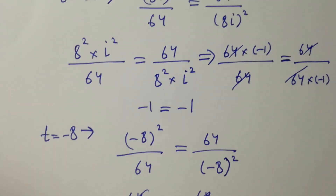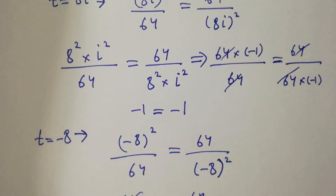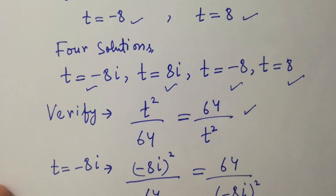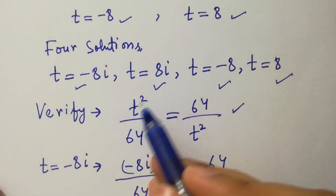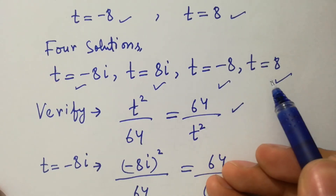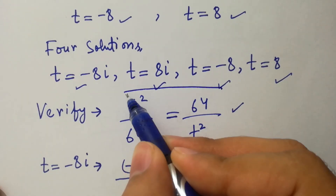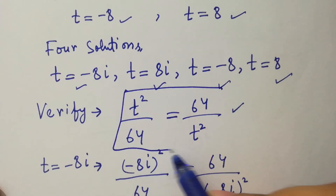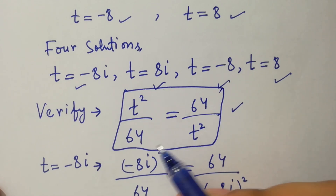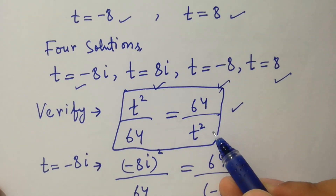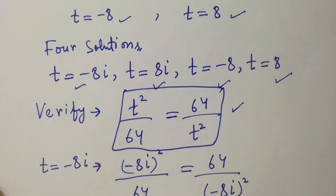This shows that the values t equal to minus 8i, 8i, minus 8, and 8 all satisfy the equation t squared over 64 equal to 64 over t squared. Thanks for watching this video. Please subscribe to this channel to get notifications of my new videos.